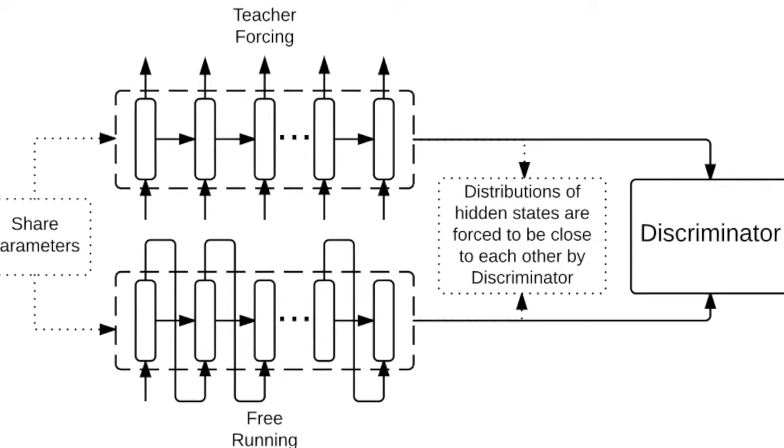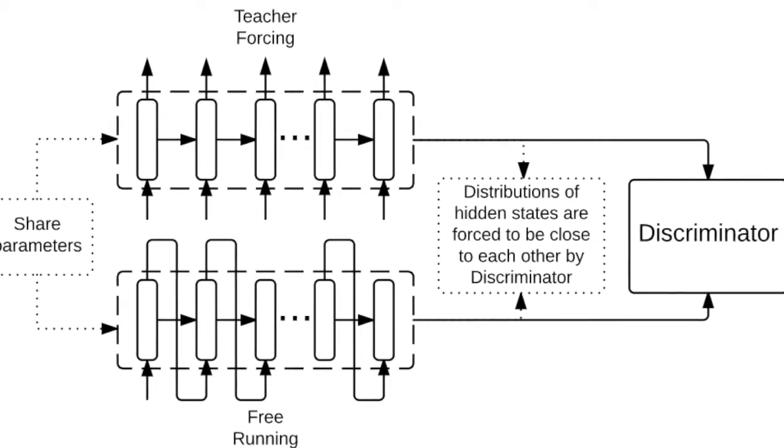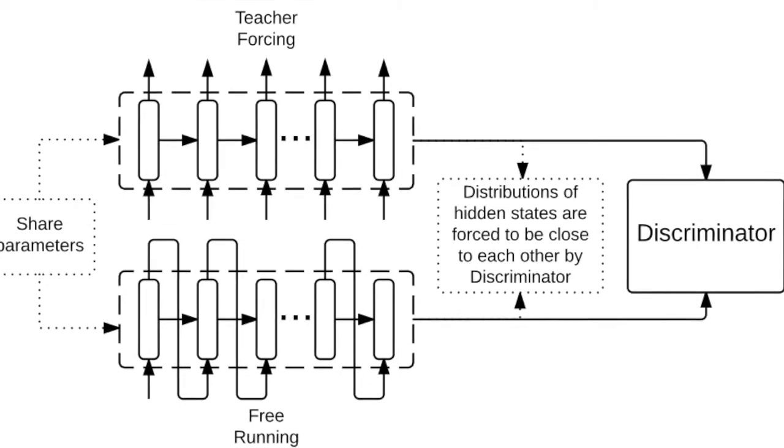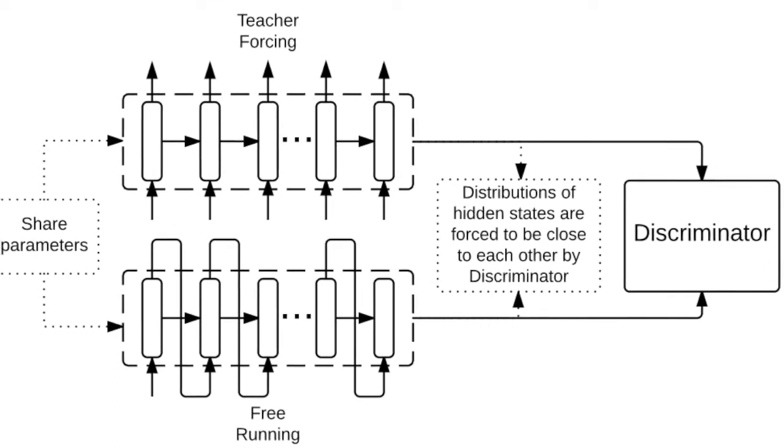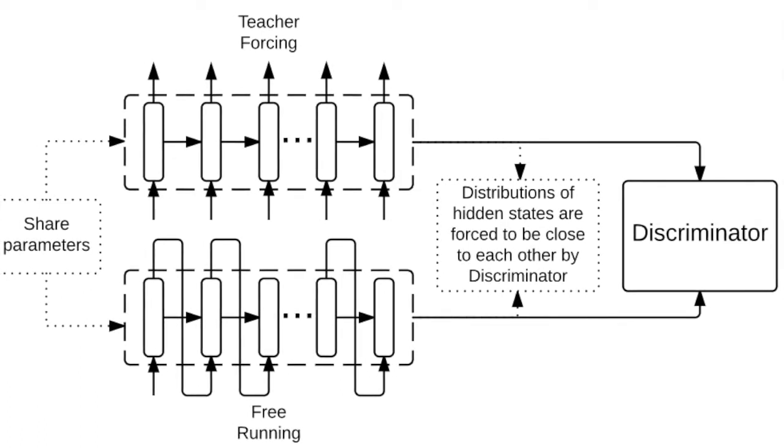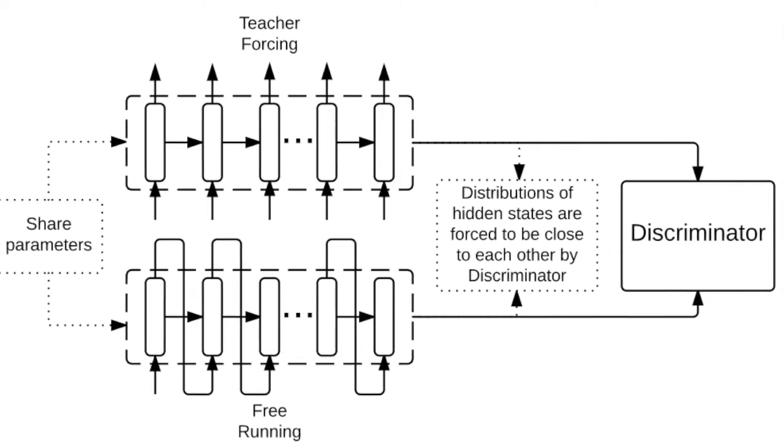We introduce the Professor Forcing algorithm, which uses adversarial domain adaptation to encourage the dynamics of the recurrent network to be the same when training the network and when sampling from the network over multiple time steps.